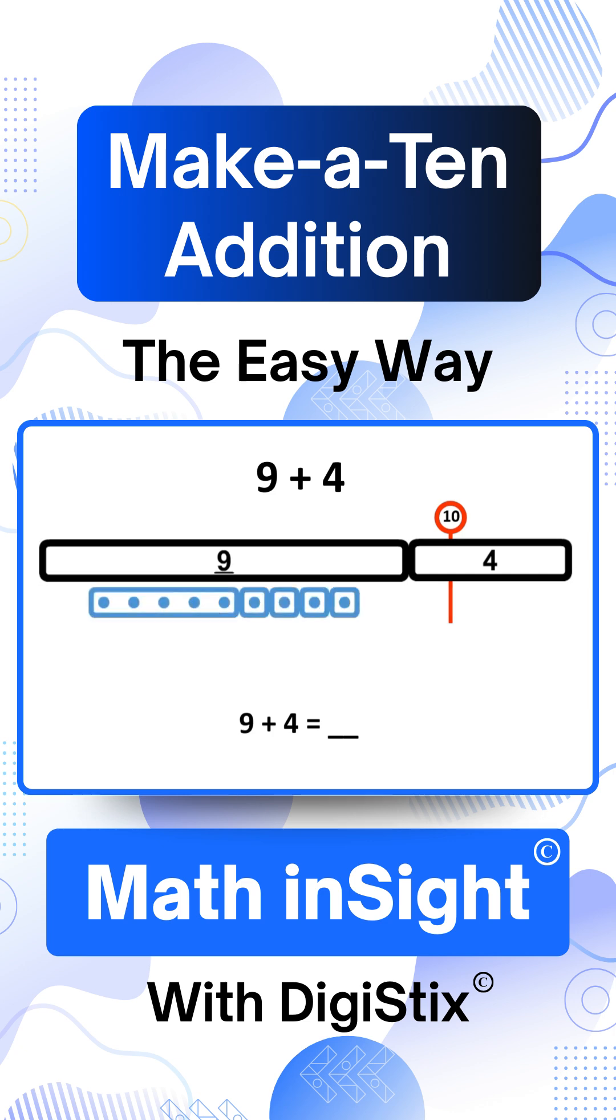We start with 9, which we show like this. The number we add to 9, which is 4, has two parts. The first part is the number we add to 9 to make a 10. It's 1. We call it the 10-pal because 9 and 1 together make a 10.